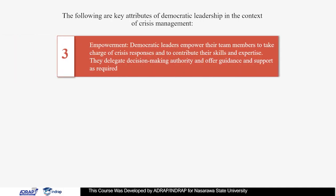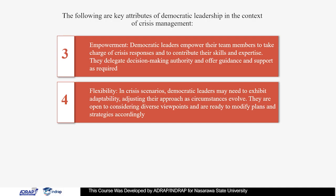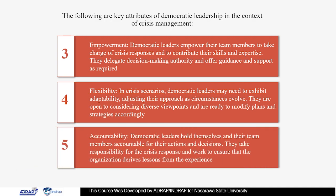Empowerment: democratic leaders empower their team members to take charge of crisis responses and to contribute their skills and expertise. They delegate decision-making authority and offer guidance and support as required. Flexibility: in crisis scenarios, democratic leaders may need to exhibit adaptability, adjusting their approach as circumstances evolve. They are open to considering diverse viewpoints and are ready to modify plans and strategies accordingly. Accountability: democratic leaders hold themselves and their team members accountable for their actions and decisions. They take responsibility for the crisis response and work to ensure that the organization derives lessons from the experience.